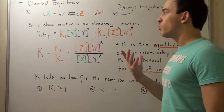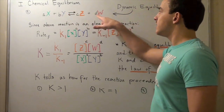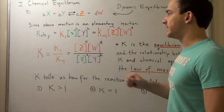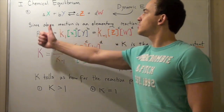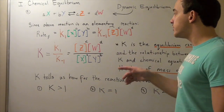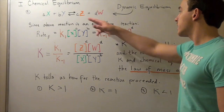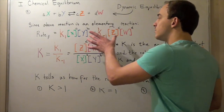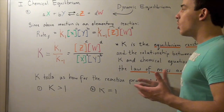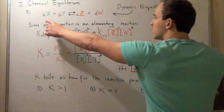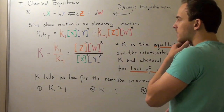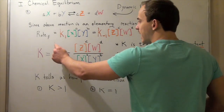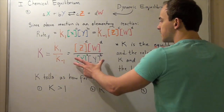This equals the rate of the reverse reaction — Z and W converting back to X and Y — which equals k₋₁ times the concentration of Z to the c power times the concentration of W to the d power. These two rates are equal because we're at dynamic equilibrium, and we're only able to write the rate laws using the coefficients because this is an elementary reaction. Bringing the constants to one side and the concentrations to the other, we get k₁ divided by k₋₁ equals the concentration expression of products over reactants.